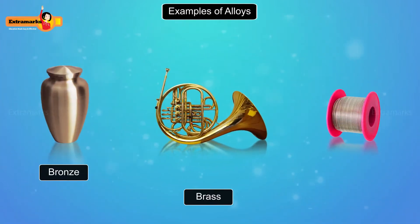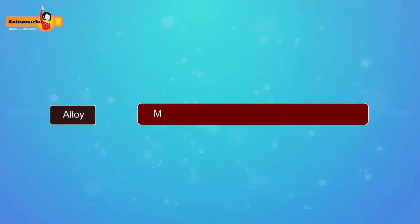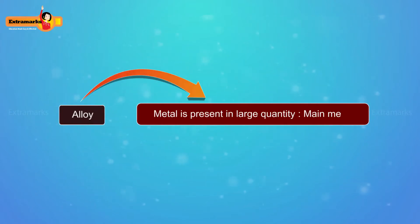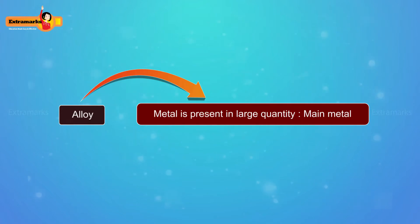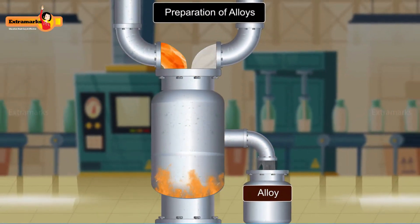Bronze, brass, solder, etc. are some examples of alloys. In an alloy, one of the constituent metals is present in a large quantity as compared to others — it is called the main metal.